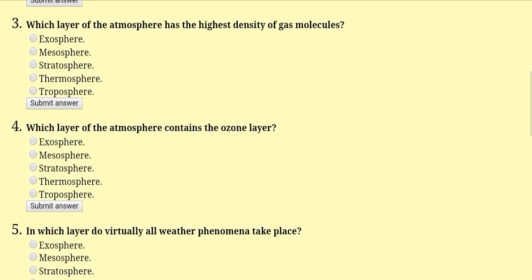Which layer of the atmosphere has the highest density of gas molecules? The troposphere has the highest density of gas molecules because of gravitational pull. The gravitational pull brings gas molecules down to the Earth's surface, so the density level is more at this point. The answer is troposphere.